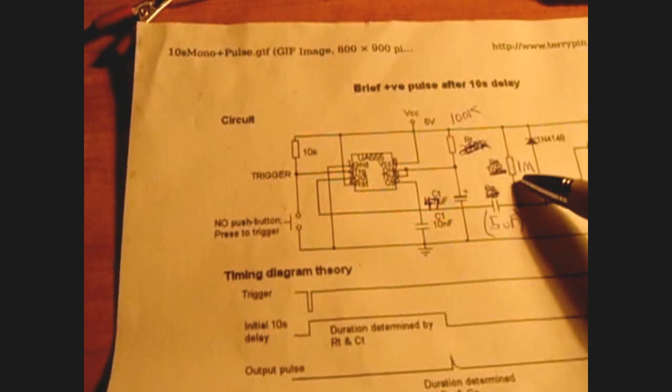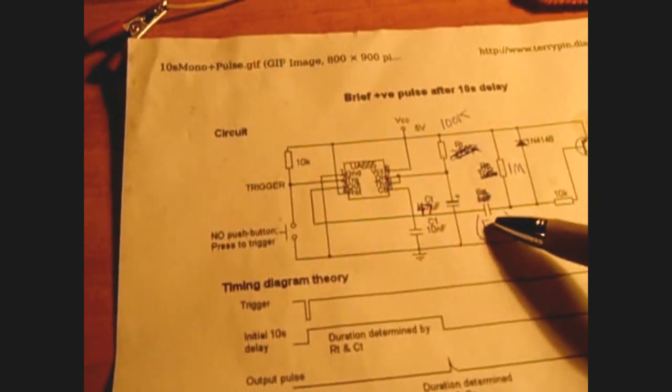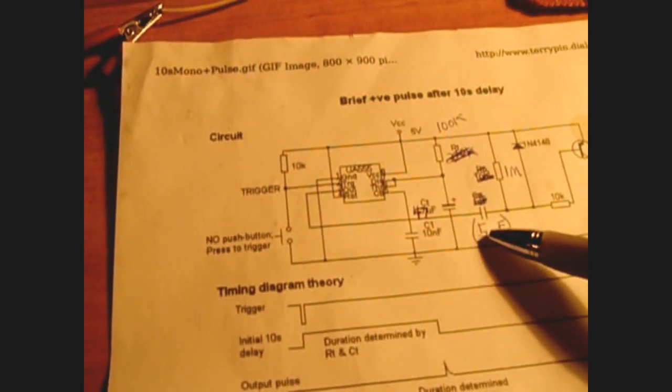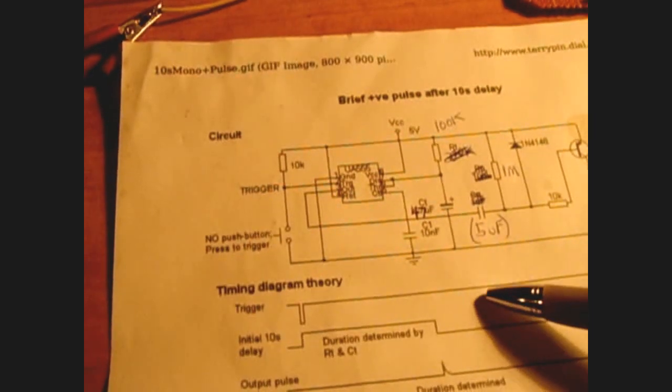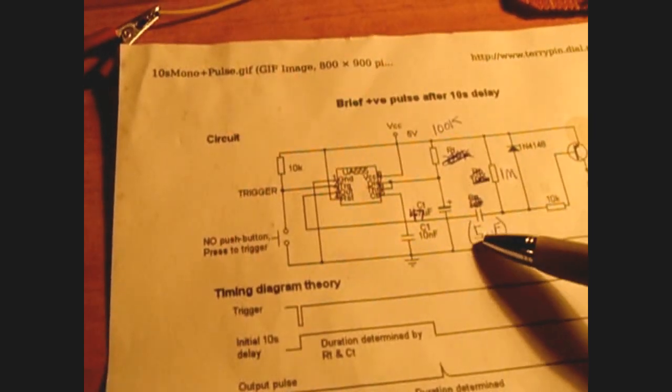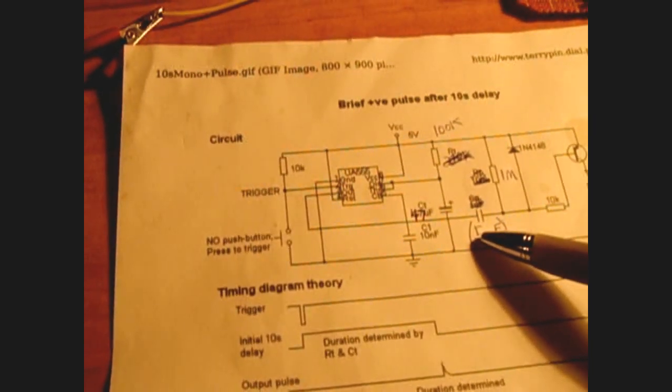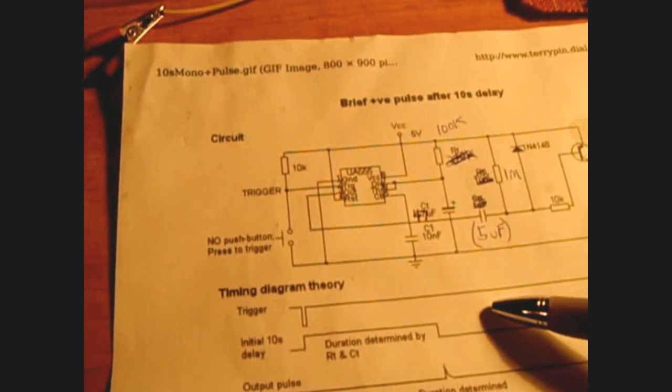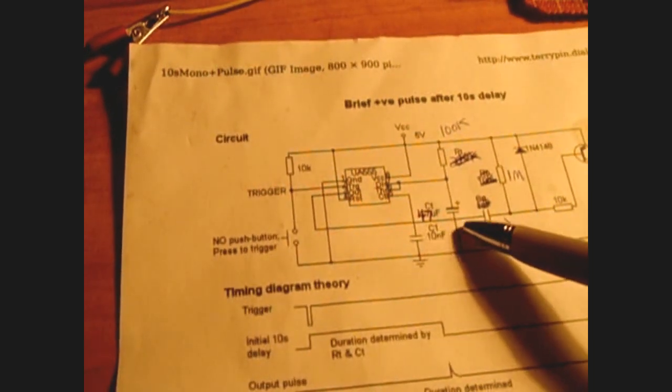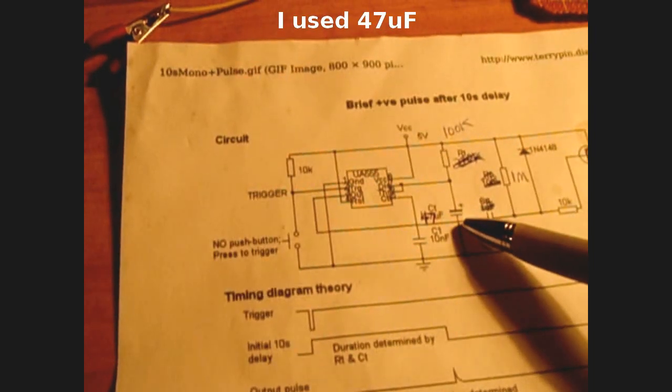I like to just play with the capacitor values, a lot easier. So if you want to make the duration longer of the pulse, adjust this higher. And if you want to make the delay duration longer, you would adjust CT to a higher microfarad rating.